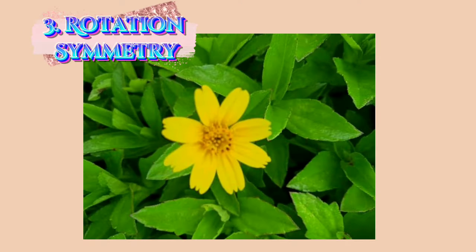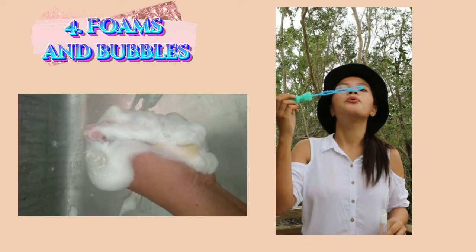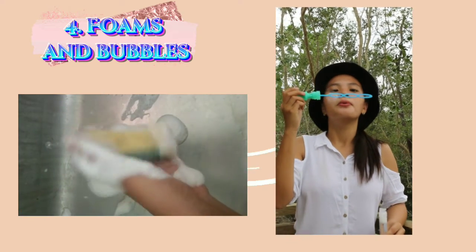The third one is rotational symmetry. The rotational symmetry of a shape explains that when an object is rotated on its own axis, the shape of the object looks the same. Many geometrical shapes appear to be symmetrical when they are rotated 180 degrees or with some angles clockwise or anti-clockwise.